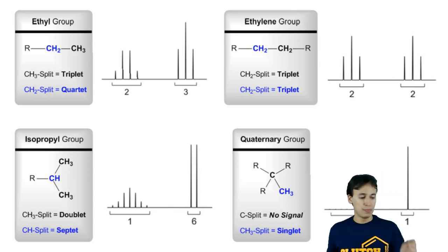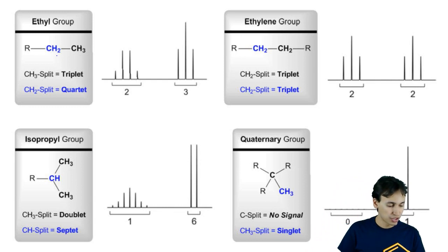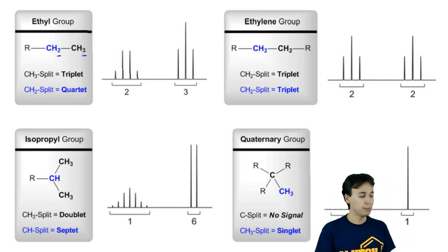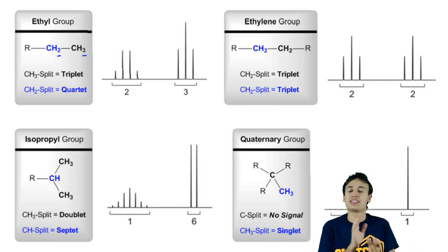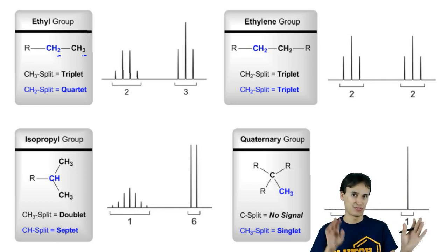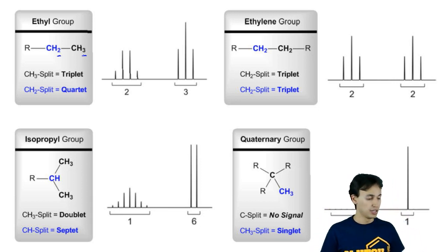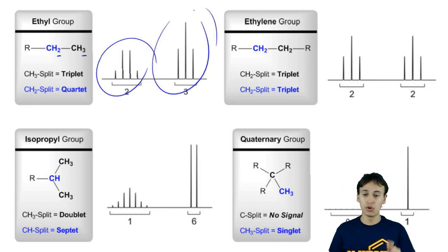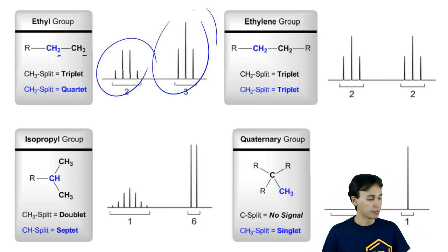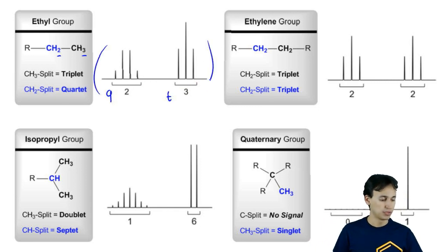An ethyl group is always CH2-CH3, so you've got a 2 next to a 3. That means that if we're using N+1 — which we would, because this isn't a very complicated example with different J values — what you're going to wind up getting is a triplet and a quartet. You'd have a quartet somewhere and a triplet somewhere. The order doesn't matter; it just matters that you have both a triplet and a quartet on the same spectrum.